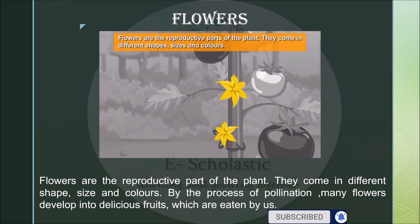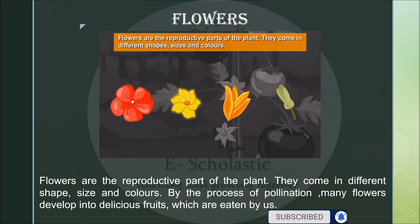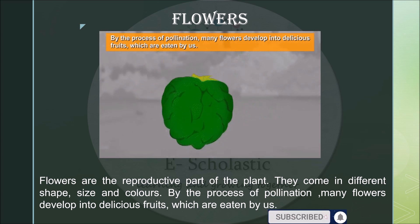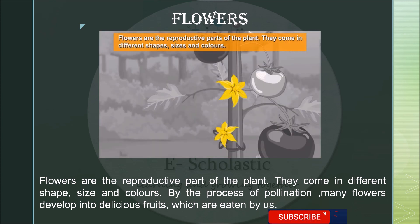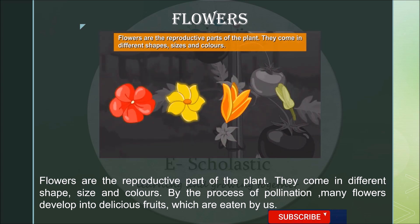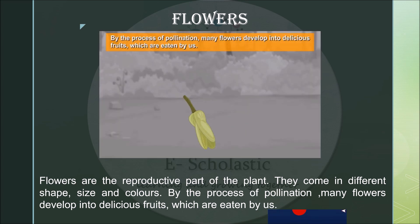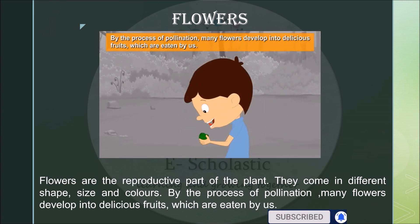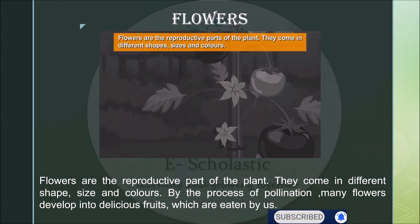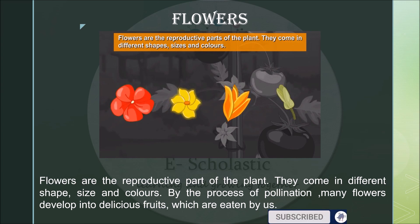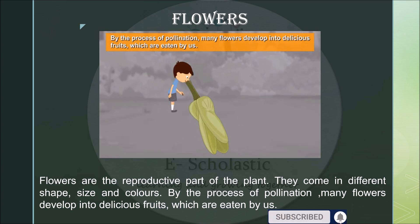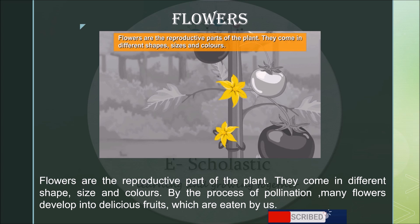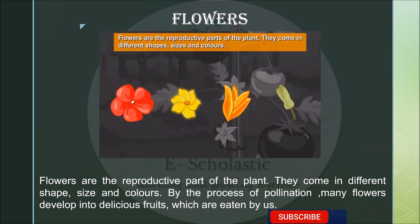The most beautiful part of plants are flowers. Flowers are the reproductive part of the plant. They come in different shapes, sizes, and colors. By the process of pollination, many flowers develop into delicious fruits which are eaten by us.